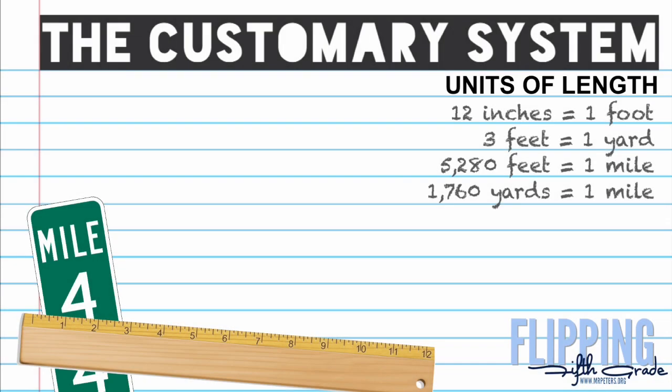In this lesson we're going to talk about the customary system. The customary system is the system that we use to measure things in the United States. If you look over here off to the right you will see the units of length, and that is what we will begin with. These will usually be provided on tests or inside the question as hints, however it's better to just start memorizing them now.